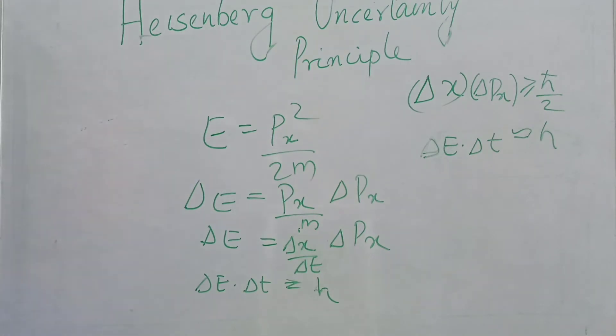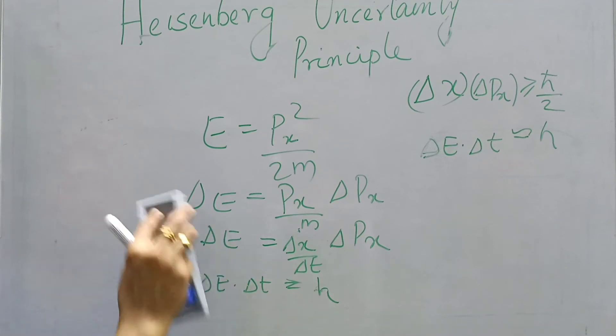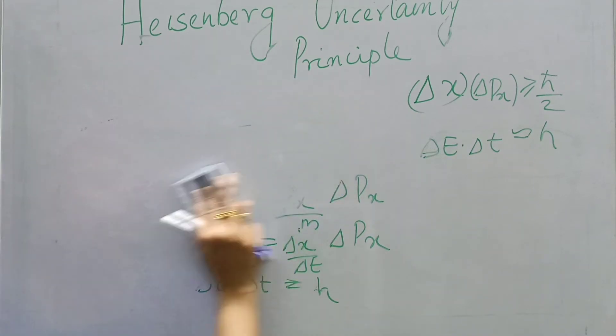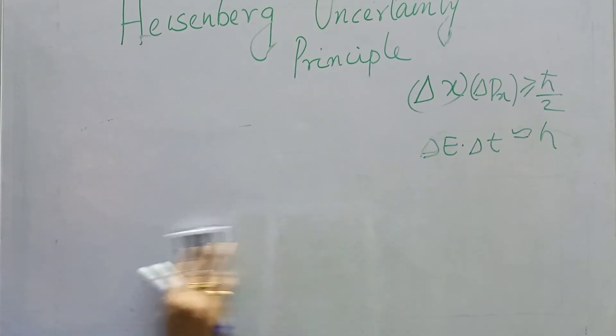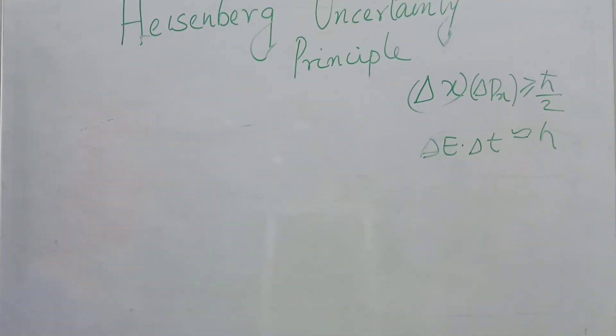That is our second uncertainty relation: delta E into delta t is of the order of Planck's constant. This was derived from E = p²/2m by taking the error.